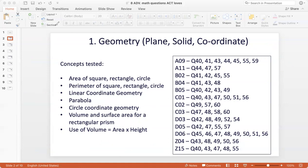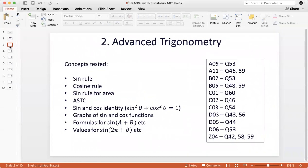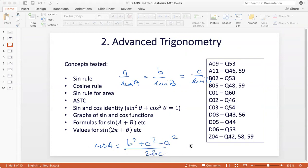The second topic in terms of numbers is advanced trigonometry. This accounted for 15 questions in my analysis. The concepts tested were the sine rule, which is a/sin(A) = b/sin(B) = c/sin(C), the cosine rule which says cos(A) = (b² + c² - a²)/(2bc) and similarly formulas for cos(B) and cos(C), sine rule for area, the ASTC rule for figuring out the sine or cos of any angle, and the identity sin²(θ) + cos²(θ) = 1.